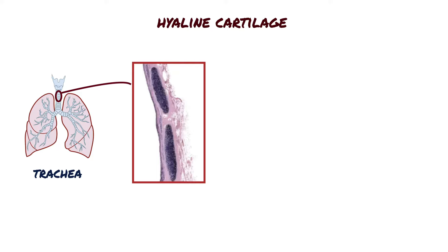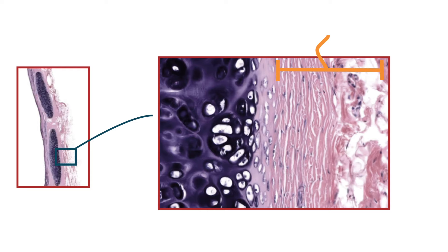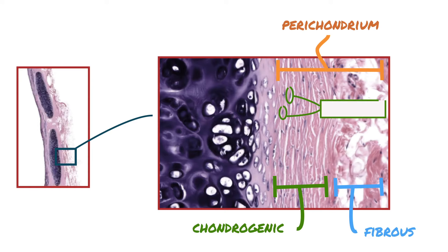Hyaline cartilage is covered externally by a fibrous membrane known as the perichondrium. The perichondrium consists of an outer fibrous layer and an inner chondrogenic layer. In the inner chondrogenic layer, we can see some spindle-shaped cells.